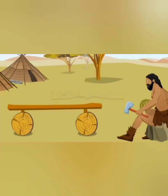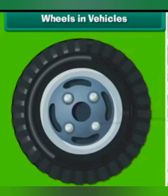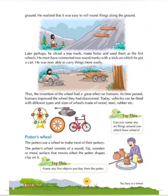As we all know, necessity is the mother of invention. The early man also felt the need of things which can help him in transporting things from one place to another, and this finally led to the invention of wheels. Children, do you know why the wheels are circular in shape? Wheels are circular in shape because it is this shape which allows easy movement. Other shapes like squares and rectangles have corners, and because of these corners, they are not able to move freely on the road.